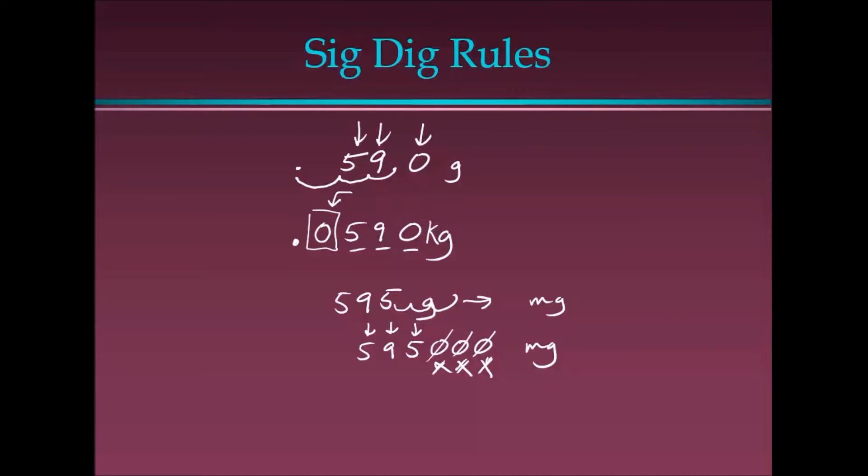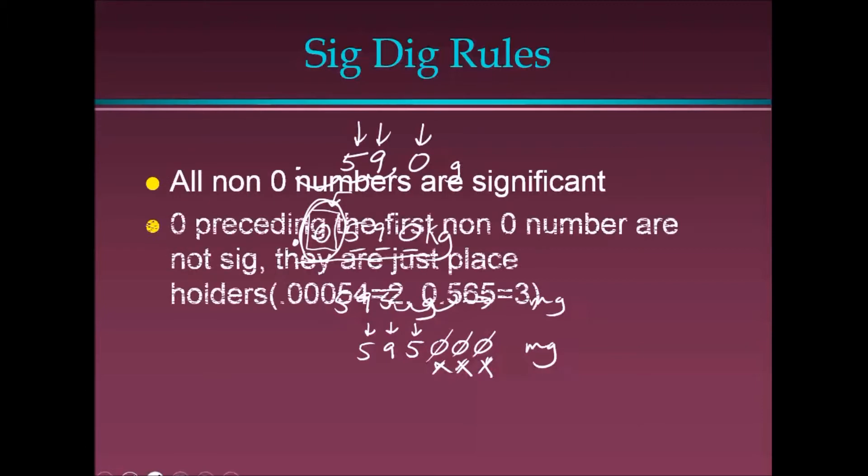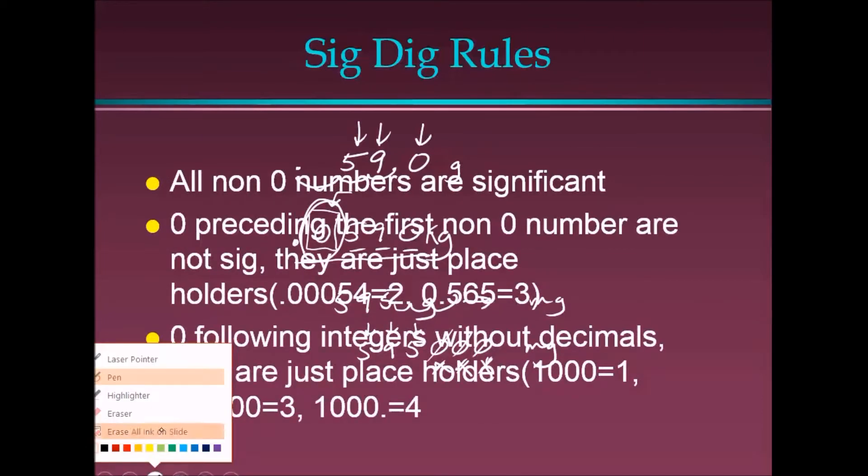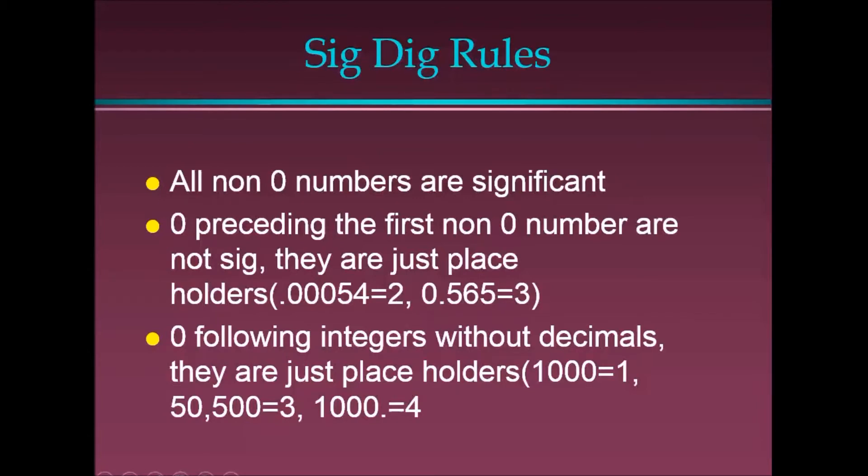They are placeholders. So there are two occasions in which a number is not considered to be a significant digit. Both involve zeros. When we're dealing with a fraction, this is a fraction, and that fraction is begun with a zero. And when we're dealing with a large number, something to the tens or hundreds or thousands with zeros following it. So you can see all non-zero numbers are significant. Period. Zeroes preceding the first non-zero numbers are not significant. They are just placeholders. Zeroes following integers without decimals. They are just placeholders.